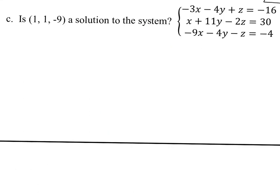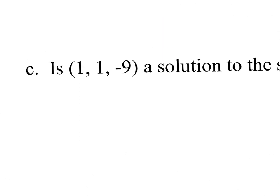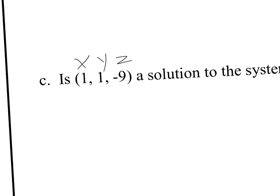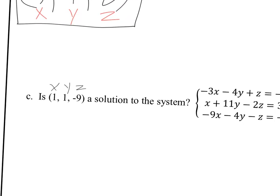So in the third example here, it's technically substitution, but I'm not going to have to really solve anything. I just need to determine is 1, 1, negative 9, a solution to the system. So remember, if you're given a point, you're given an x value, a y value, and a z value. So you can plug all those in. So that's actually what you have to do. It's not that you can do it. It says that you have to do it.